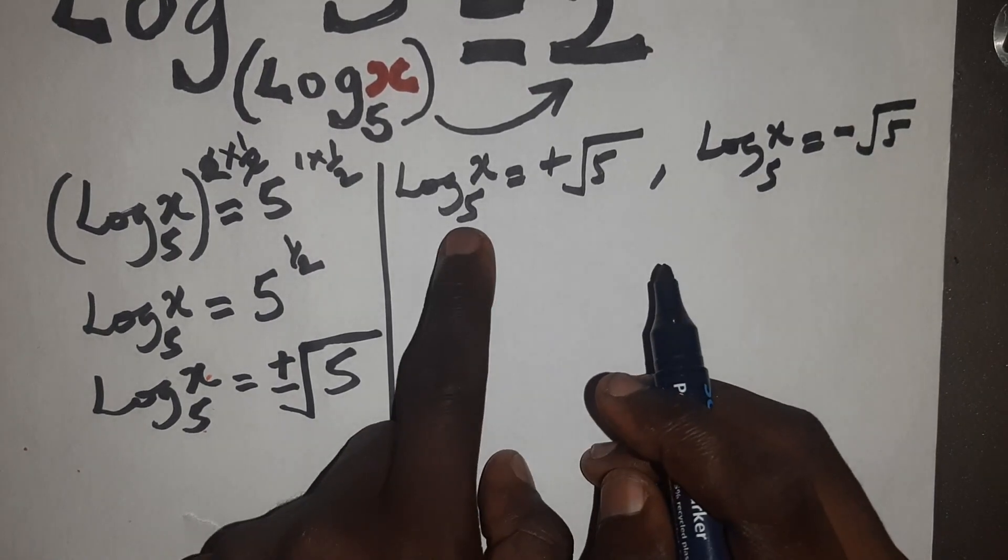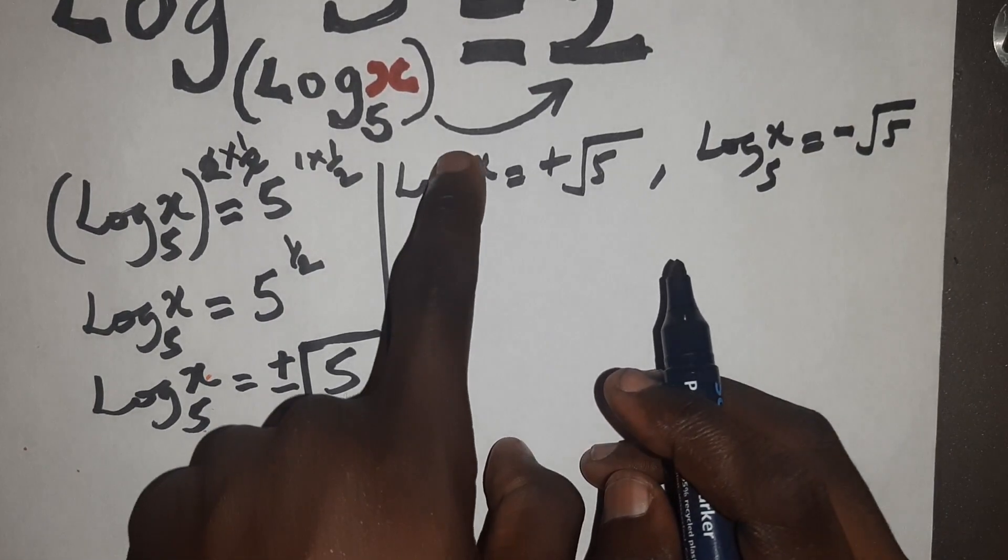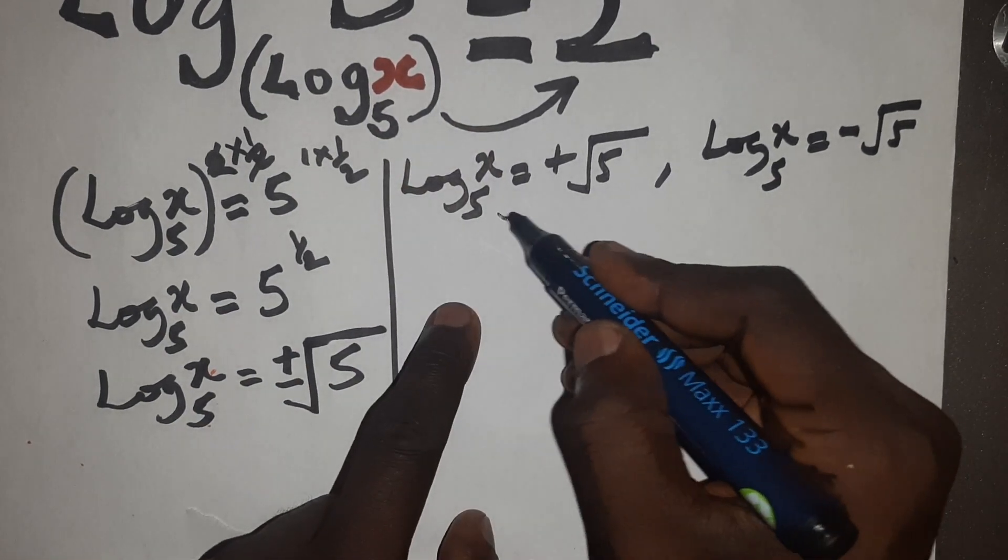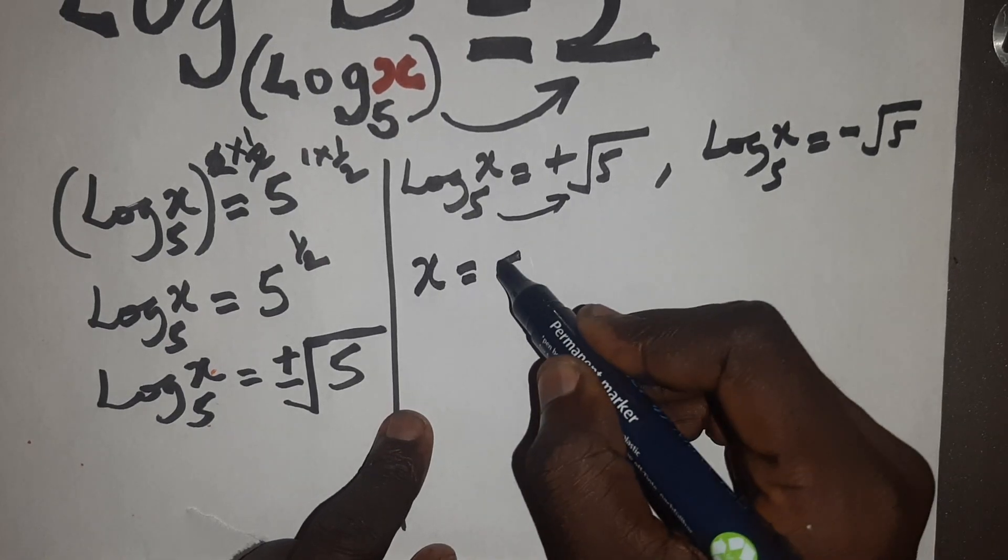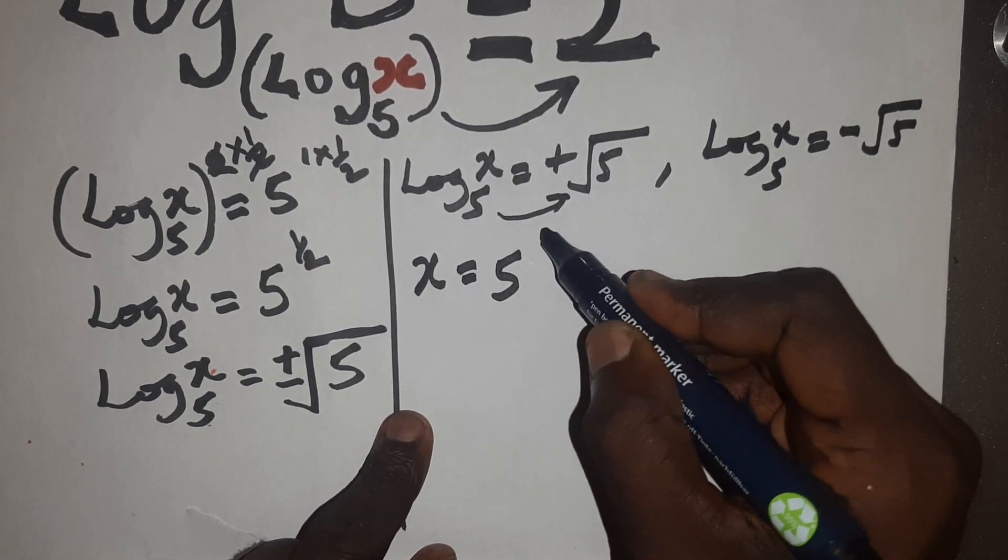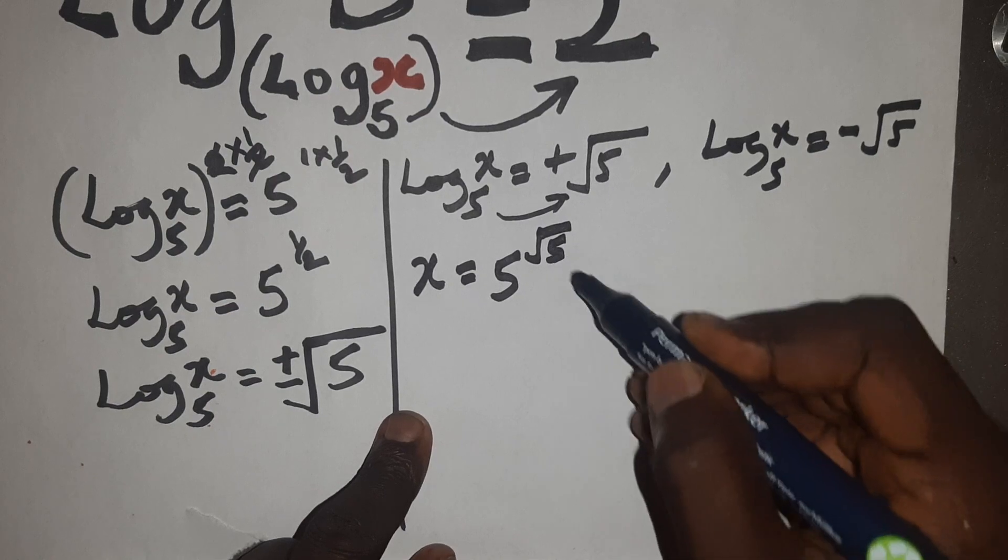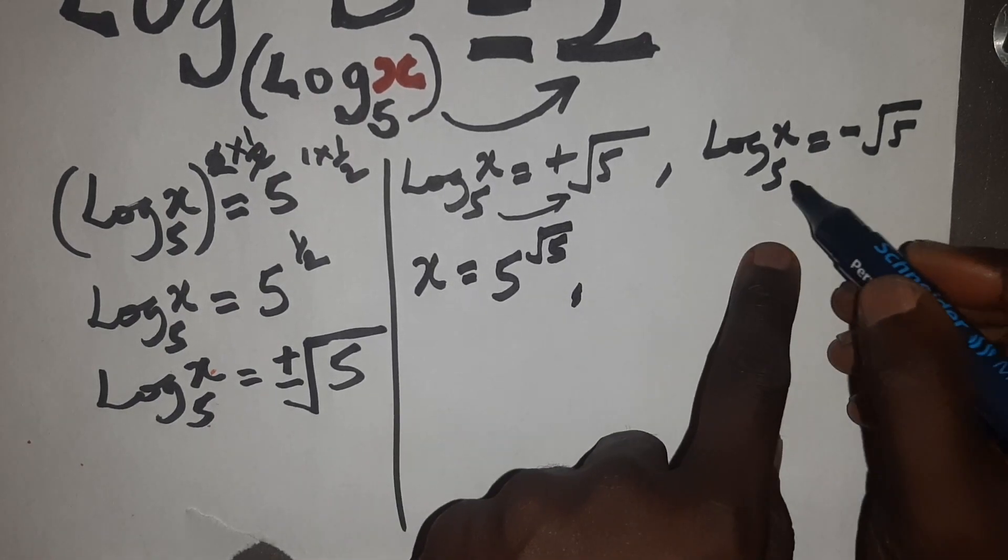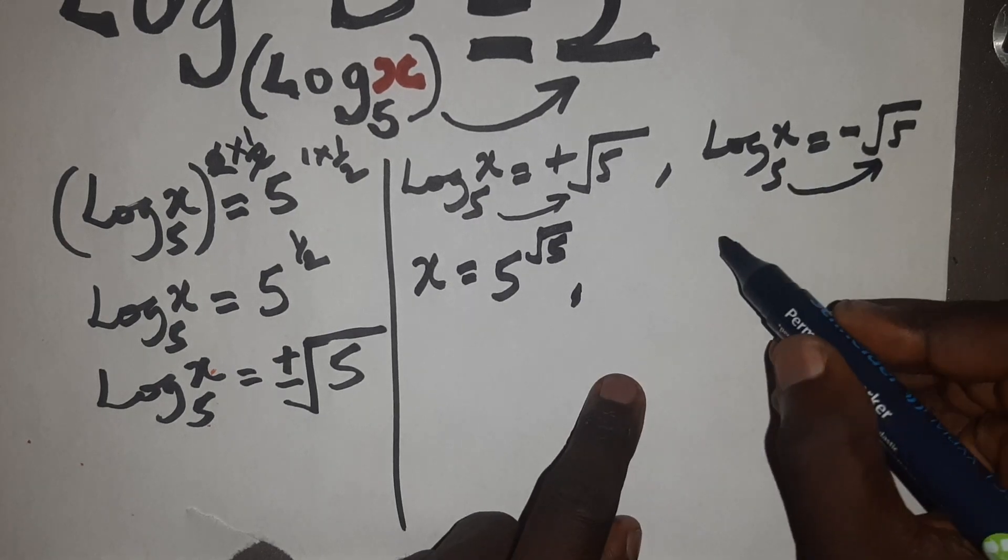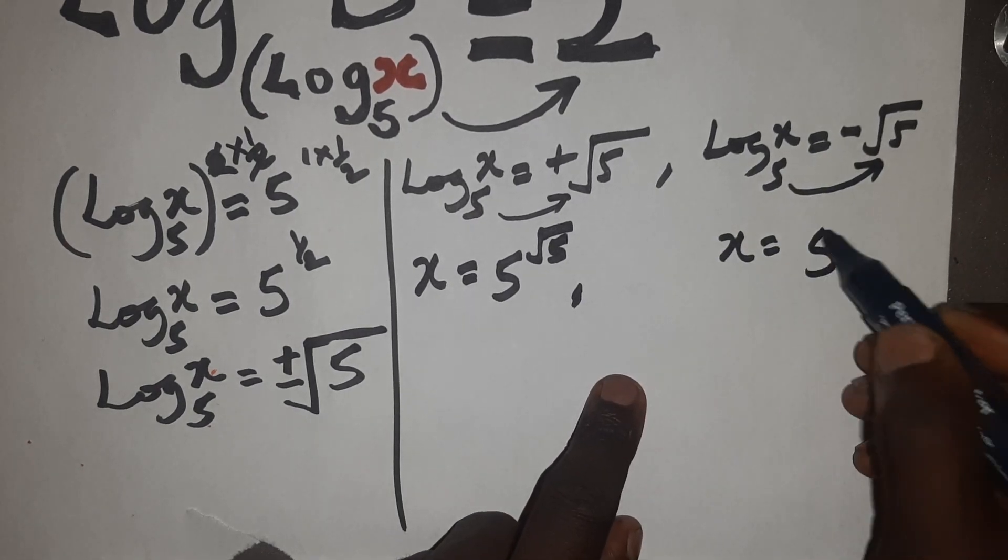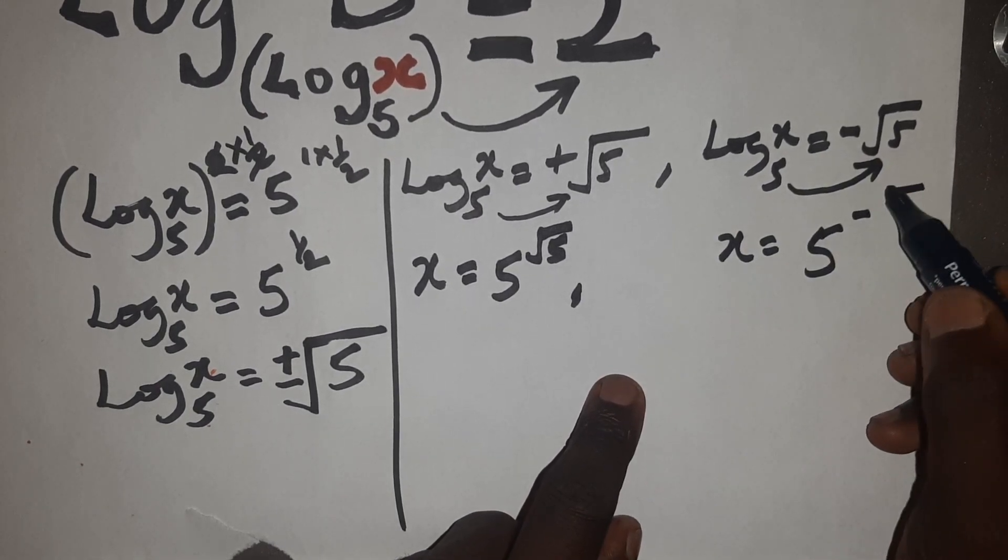So solving this, 5 raised to the power of something will give x. Since it's equated to this, we know that 5 raised to the power of this must give x. So we say x is equal to 5 raised to the power of root 5. And also in this case, 5 raised to the power of minus root 5 must give x also. So we say x equals to 5 raised to the power of minus root 5.